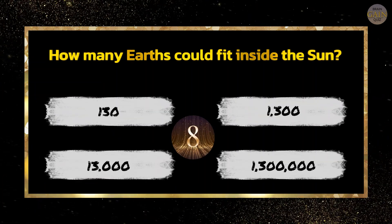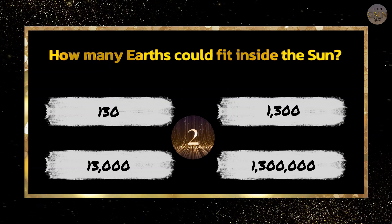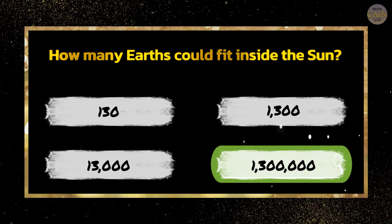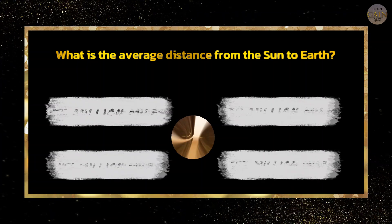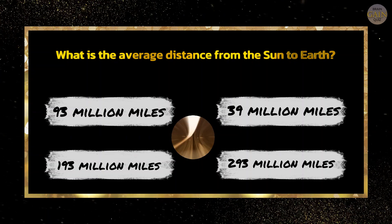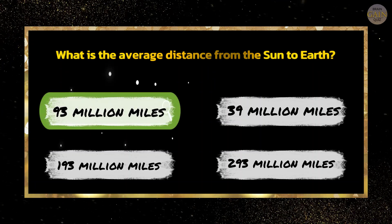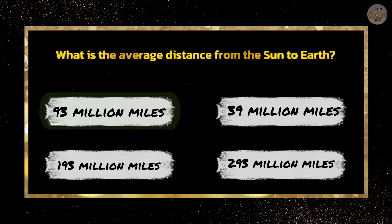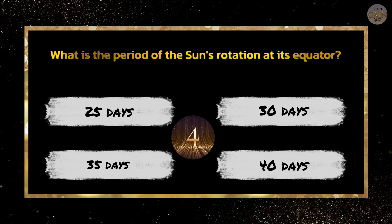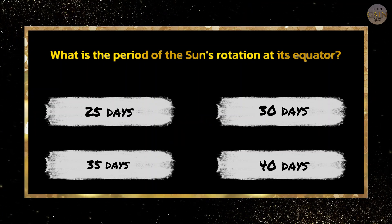How many Earths could fit inside the Sun? 1.3 million. What is the average distance from the Sun to Earth? 1.4 million km. What is the period of the Sun's rotation at its equator? 25 days.